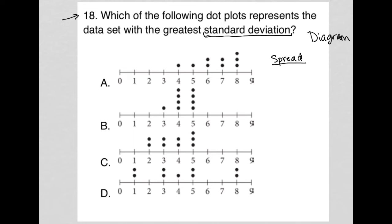So the closer the dots are to each other, the lower the standard deviation. The further apart the dots are from each other, the greater the standard deviation. So just having that understanding, the answer must be choice D, because you can see our dots here are spread between 1 and 8. That represents the largest spread out of all of the answer choices.